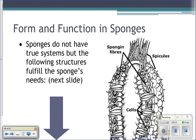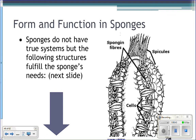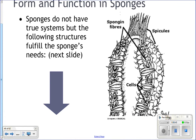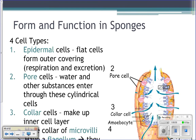Sponges don't have tissues or systems to carry out essential functions, but they still have to carry out reproduction, respiration, feeding, and all of that. They do it with four kinds of cells.